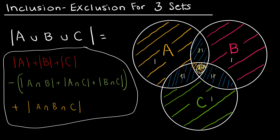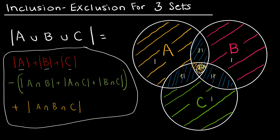Could I continue this for four sets? There appears to be a pattern: add all individual sets, subtract the intersections of two sets, add the intersections of three sets, subtract the intersections of four sets, and so on. Before looking at a four-set question, let's look at this three-set example.